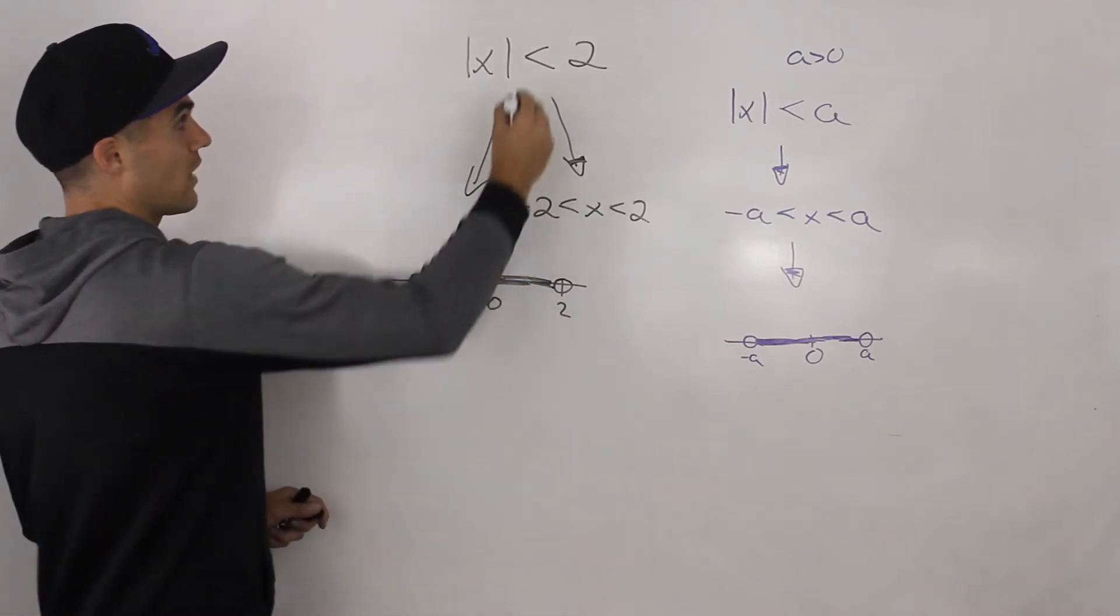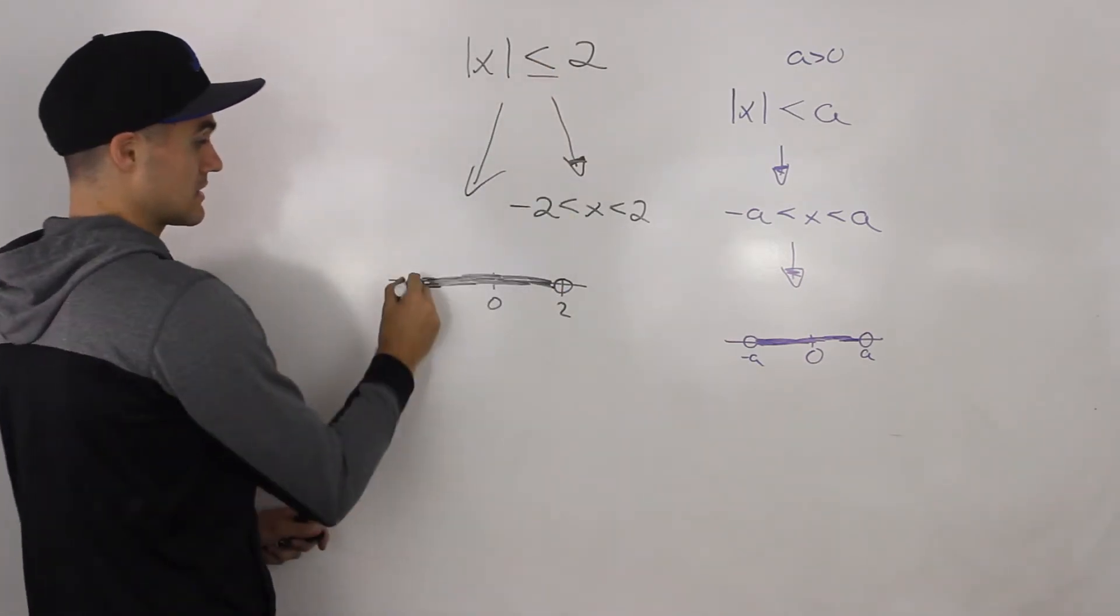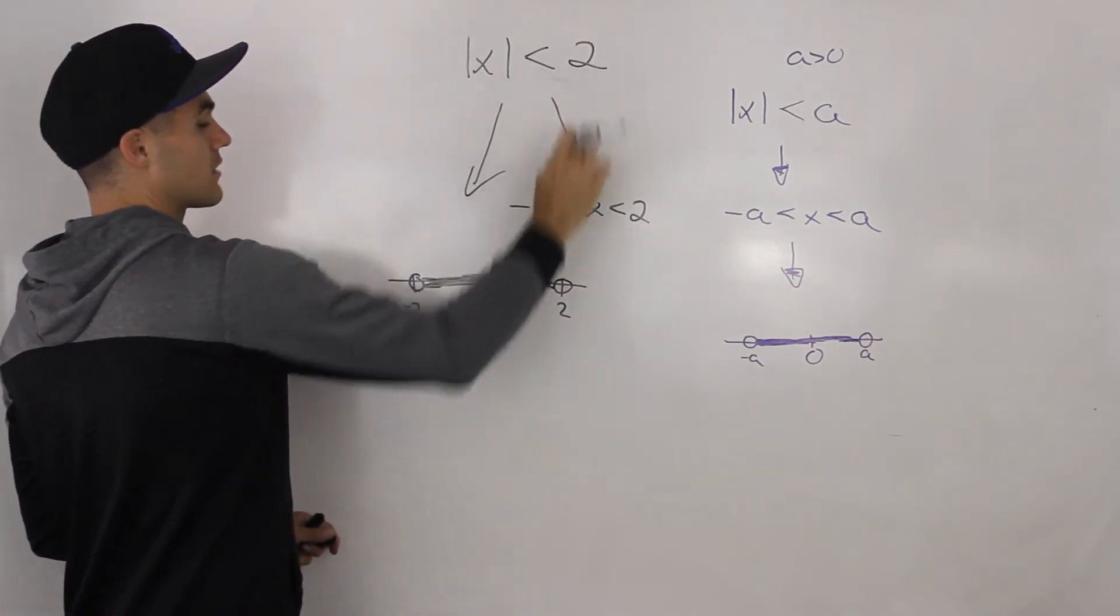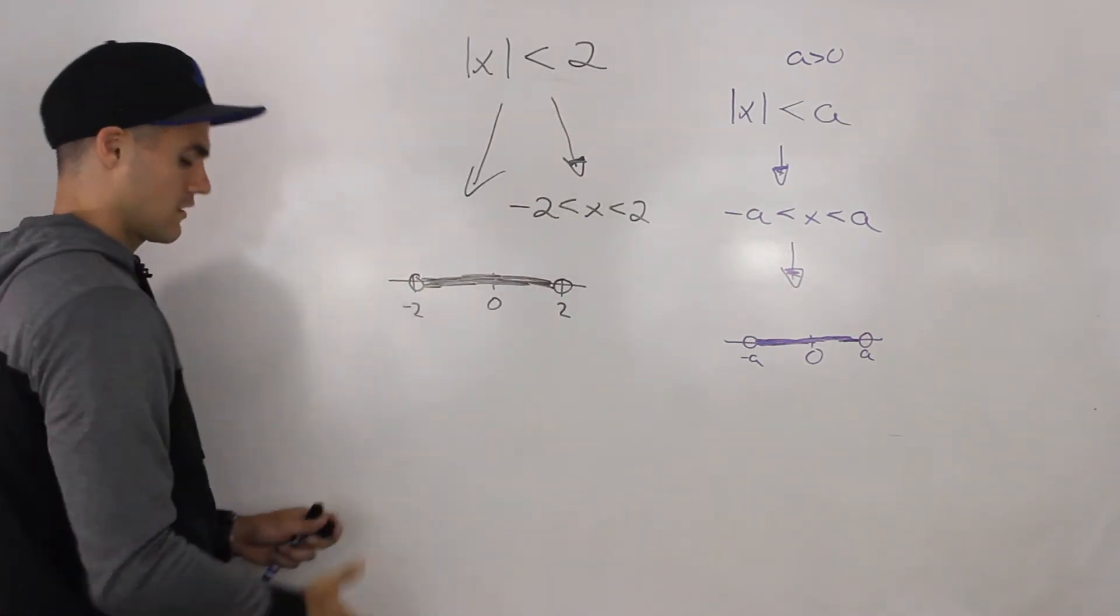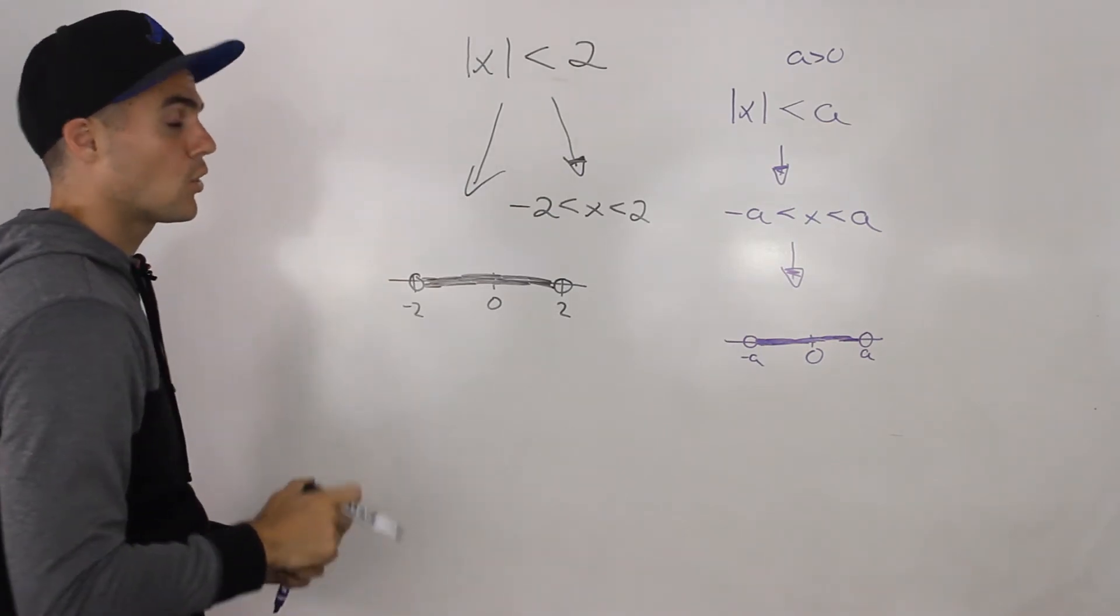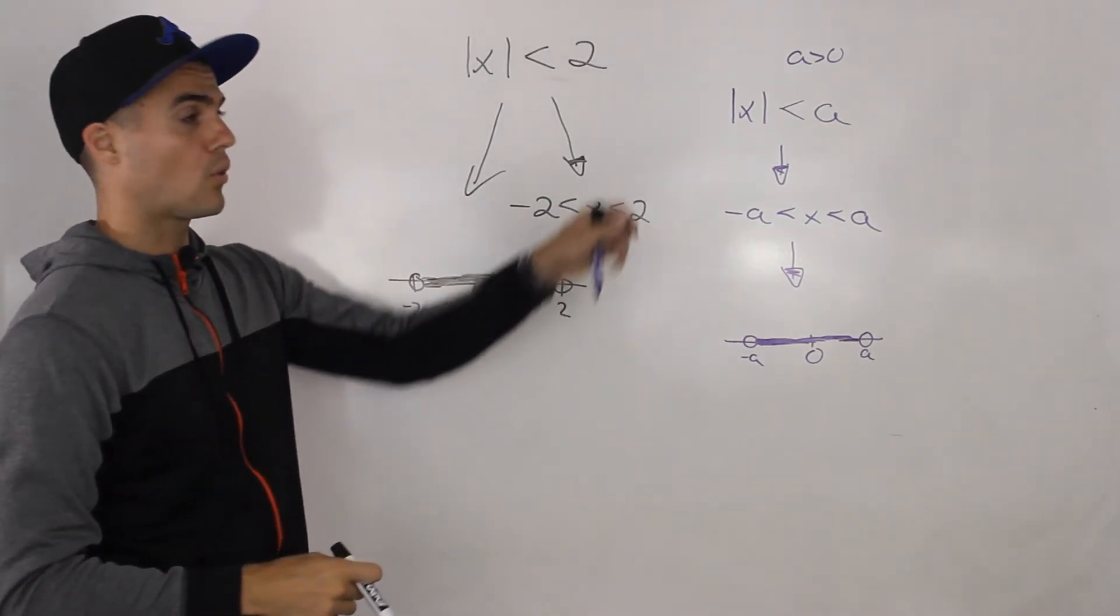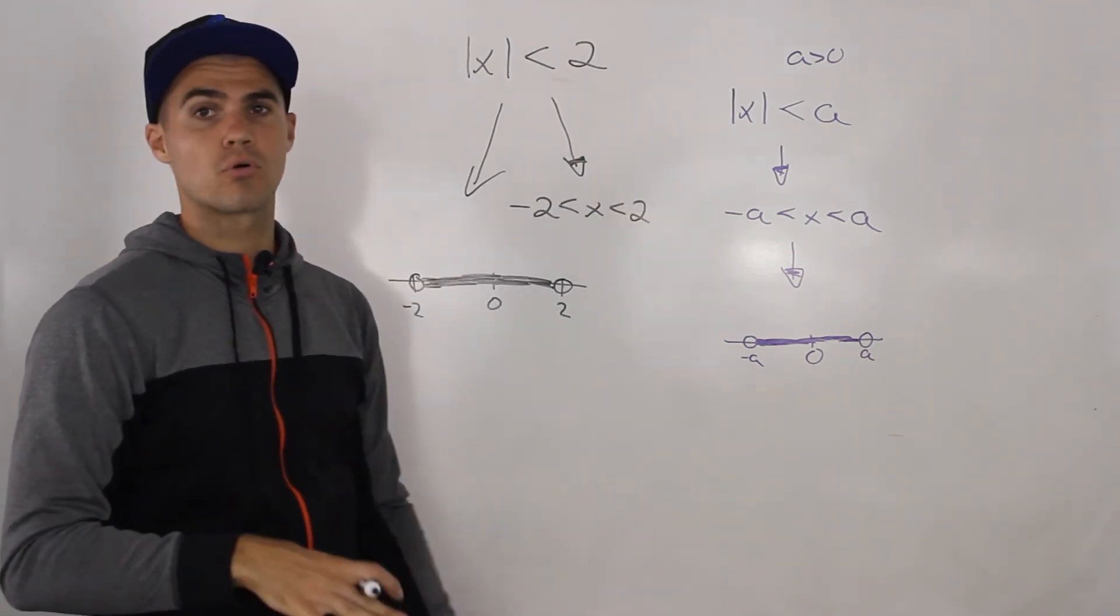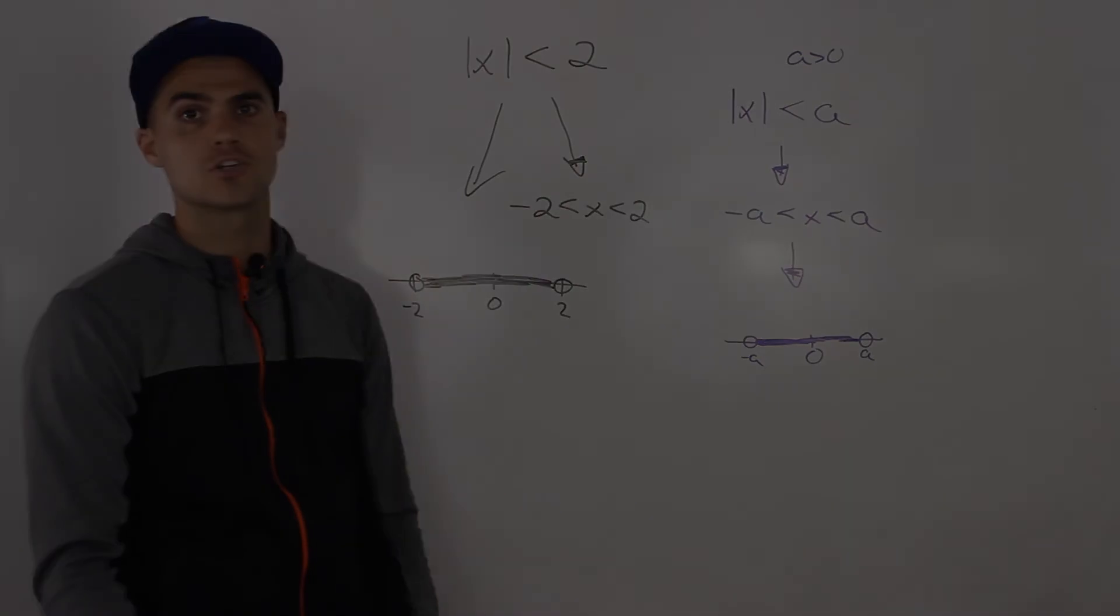Just be aware, if there was a less than or equal sign, these would be solid dots. But because it's not inclusive, they are holes. Make sure you go back to that section and go over that chart where I cover all these general cases. Super important, it's definitely going to come up on your test.